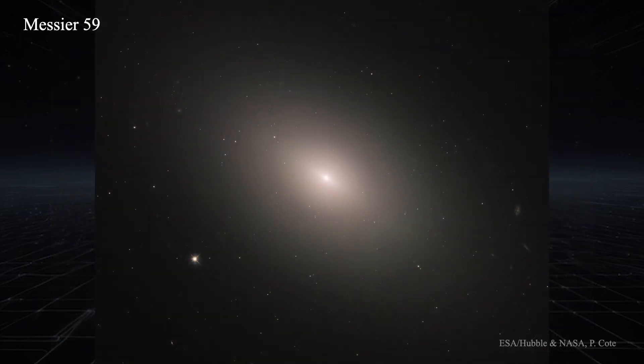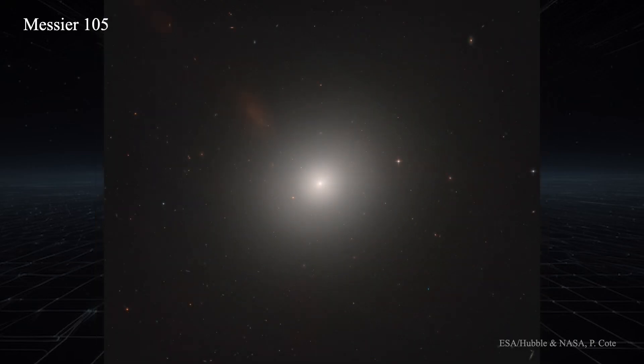Here is Messier 59, also in the Virgo cluster of galaxies. It was discovered by Johann Koehler in April of 1779 while he was observing a nearby comet, and Charles Messier listed it in his catalog just three days later — back then there was an intense rivalry to discover comets. This galaxy lives at about 15 megaparsecs away and is an example of an E5 elliptical, meaning its long axis is about twice the short one. Next is Messier 105, an E1 type and the largest elliptical in the Messier catalog not in the Virgo cluster, at 11 megaparsecs in the Leo M96 group.